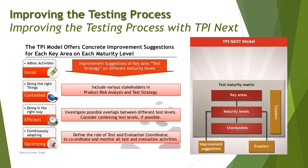The Initial level is similar to TMMi – it's just an ad hoc approach where you don't have anything predefined and there is no established process in your organization. As you keep modifying your process, you move to the next level called Controlled, which is also described as 'doing the right things' – meaning you now have an established process, unlike the previous ad hoc stage.